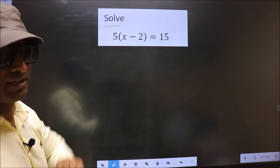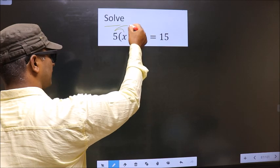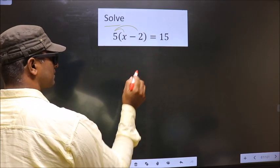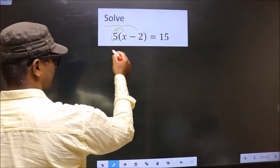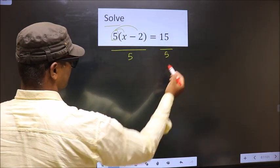Now in this equation, instead of opening up the bracket in this way, it is better if we remove 5. So to remove 5, you divide by 5 on both sides.